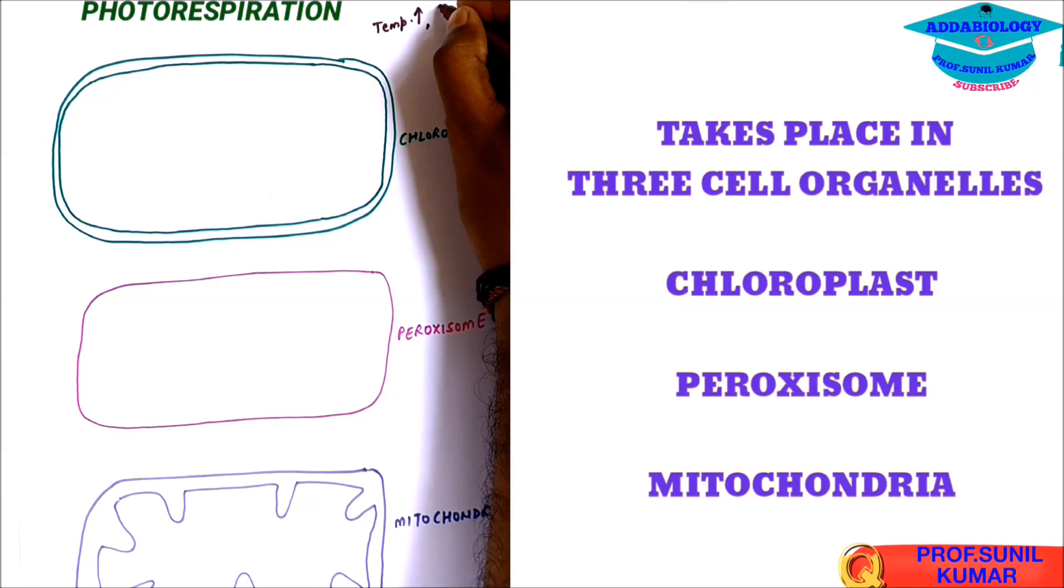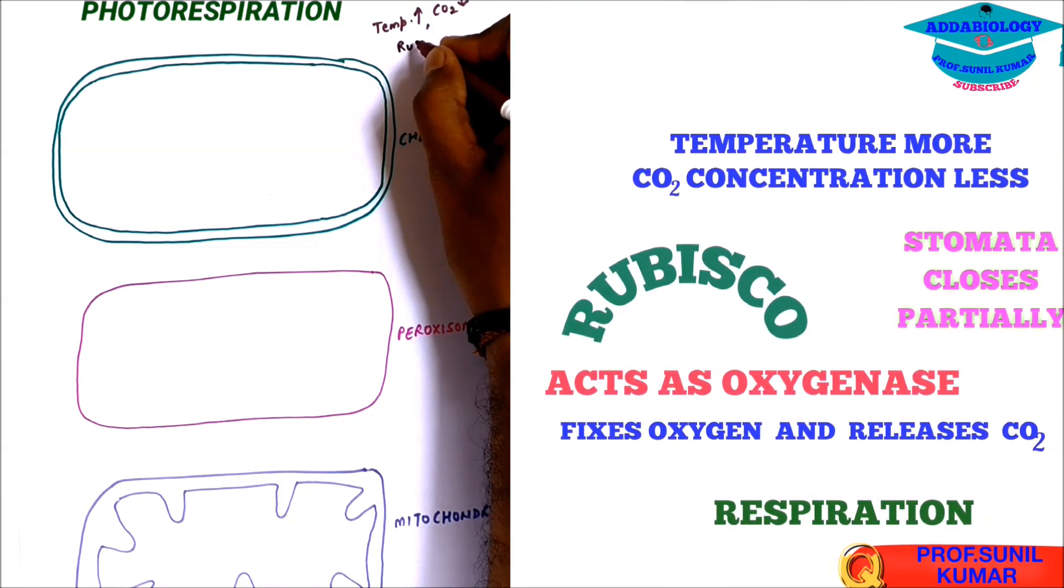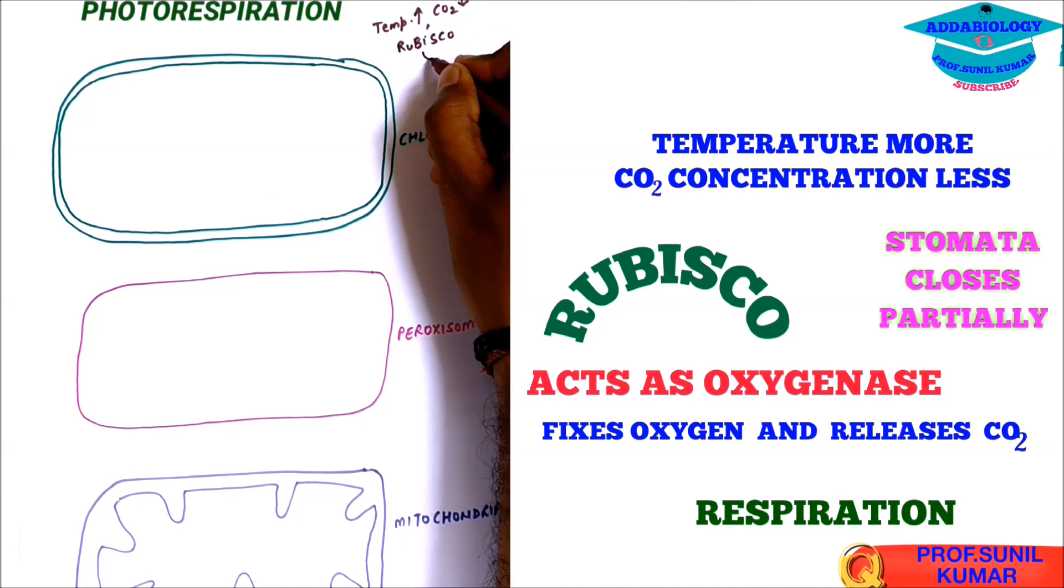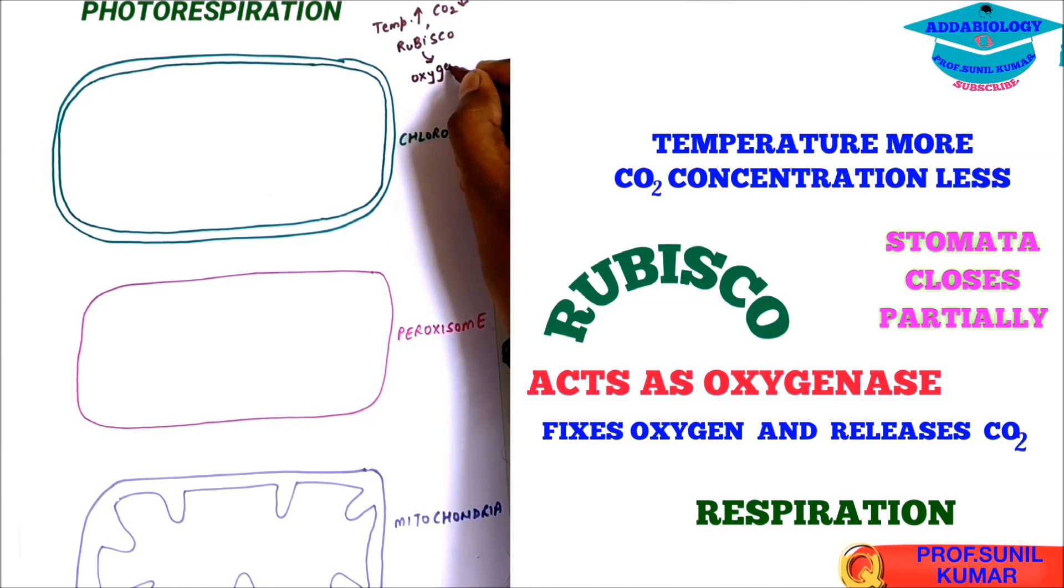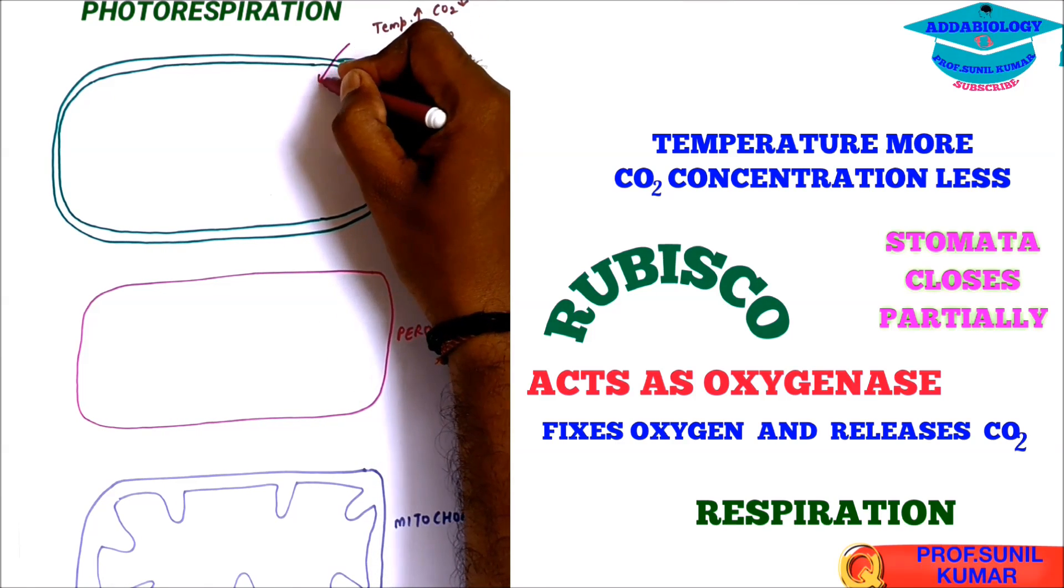Temperature is high, carbon dioxide concentration is low. Why? Because stomata is partially closed. So now rubisco will work as oxygenase. It will take in oxygen.